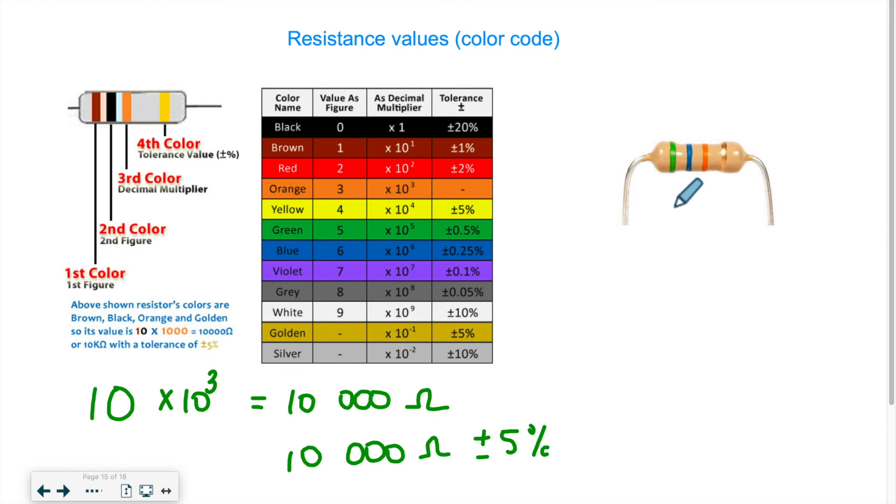If we take a look at the second example, we have green. Green, the value is five, followed by blue, which is six times 10 to the third color, which is orange, which has a value of three. Or we could say 56 with three zeros. So this here, it's the same as saying three zeros. This essentially is a thousand. So a thousand times 56 gives me 56,000. Plus or minus, we have gold again. So gold is plus or minus five percent. Let's not forget the ohms symbol. So the omega. So 56,000 ohms plus or minus five percent. So this is how you have to read this.